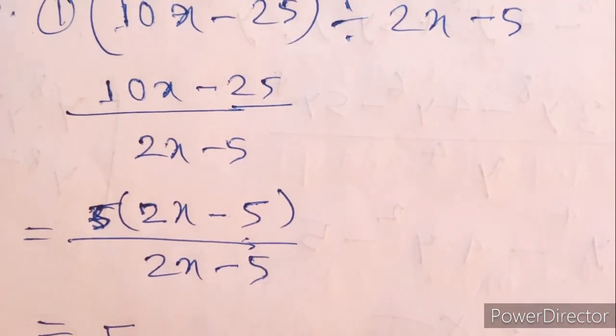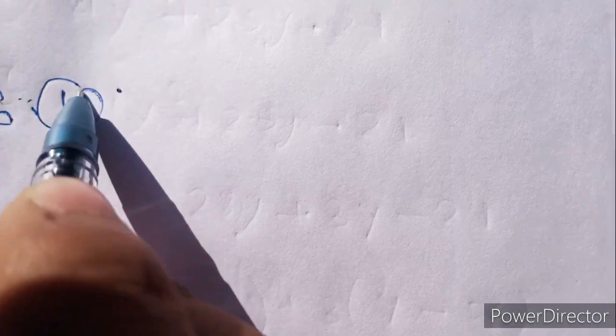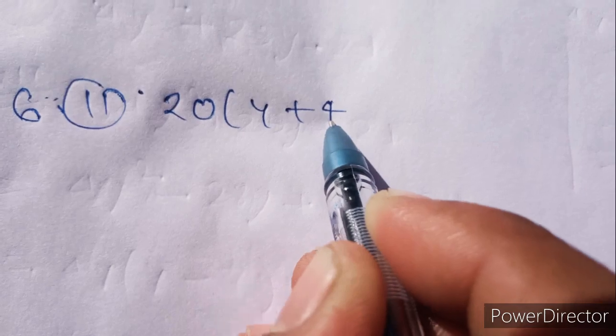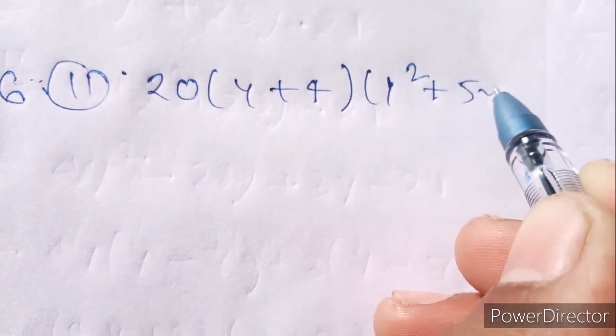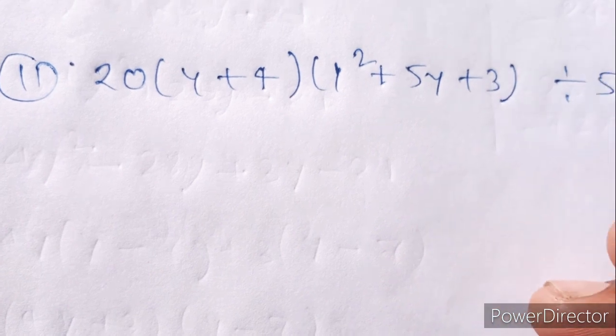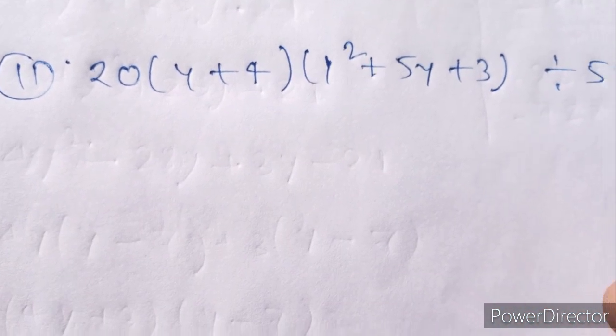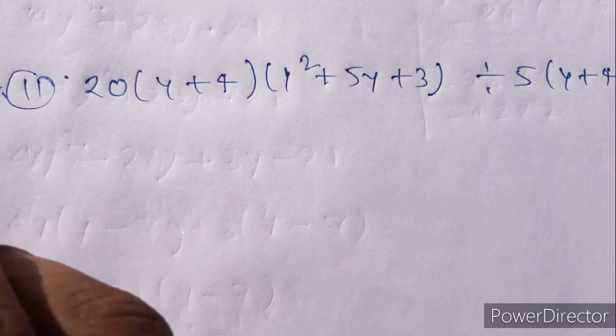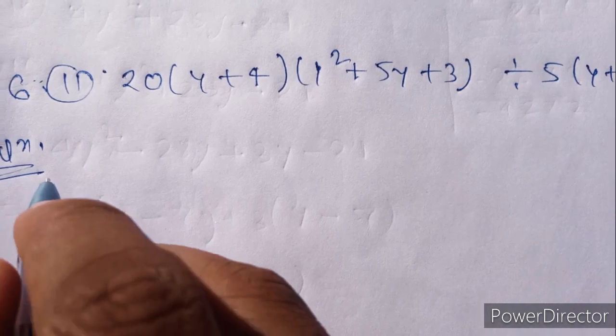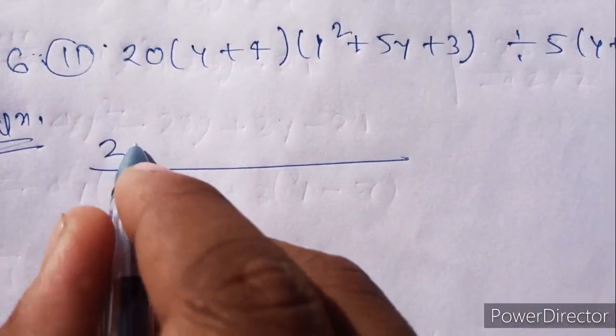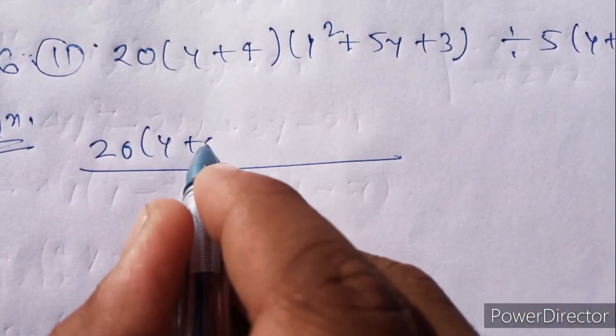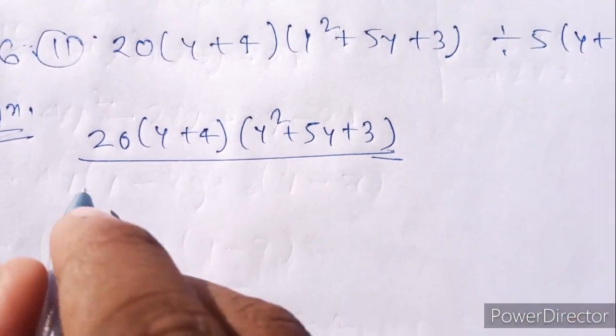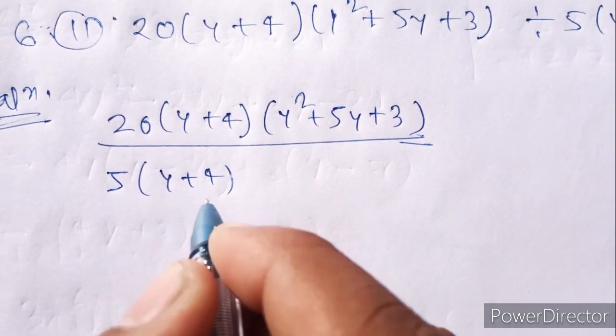Problem 2: 20y plus 4y² plus 5y plus 3 divide by 5y plus 4.